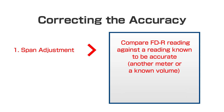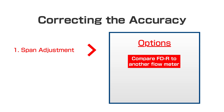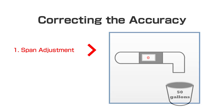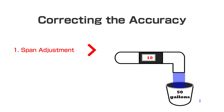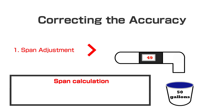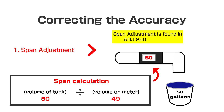Here's an example. If I have an FDR flow meter on a pipe and I want to verify it's reading accurately, I can either compare the flow rate to another flow meter on the same line, or compare the accumulated flow value as I fill up a 50-gallon tank. If I fill up the tank and the FDR only reads that 49 gallons have passed through, I can calculate the required span by dividing the actual amount — 50 gallons — by the FDR's measured amount — 49 gallons — then enter this value into the span adjustment setting to correct the flow rate.